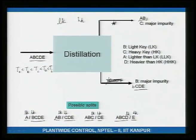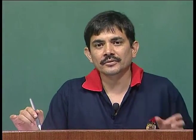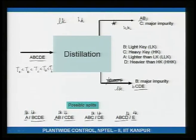With this convention, the principal impurity in the distillate is the heavy key, and the principal impurity in the bottoms is the light key. The enriching section prevents the heavy key from leaking out the top, and the stripping section prevents the light key from leaking down the bottoms.